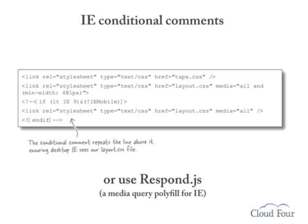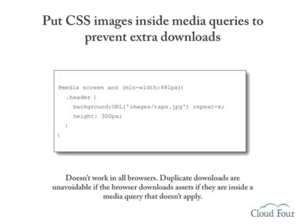We have a few tricks for IE. One option is to use IE conditional comments in your HTML to include an IE-specific stylesheet. Another is to use a JavaScript polyfill like Respond.js to give IE support for media queries. Keeping CSS images within media queries usually makes browsers only download those images in media queries that are currently being applied — not always, but it's a best practice. So instead of using display:none, contain the CSS image within the relevant media query rule.